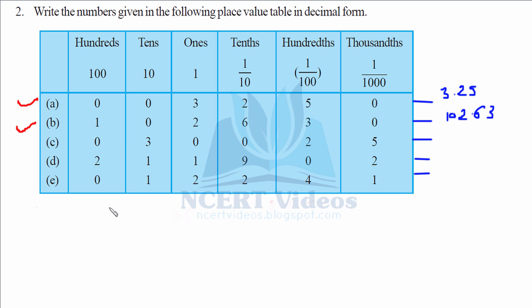Now the C part. We have three tens, that is 30. No ones, no tenths. Hundredths we have 2. So first we'll put decimal: 30.02. Now we have thousandths also. That would be plus 0.005. Adding them up: 30.025. That makes our C part.